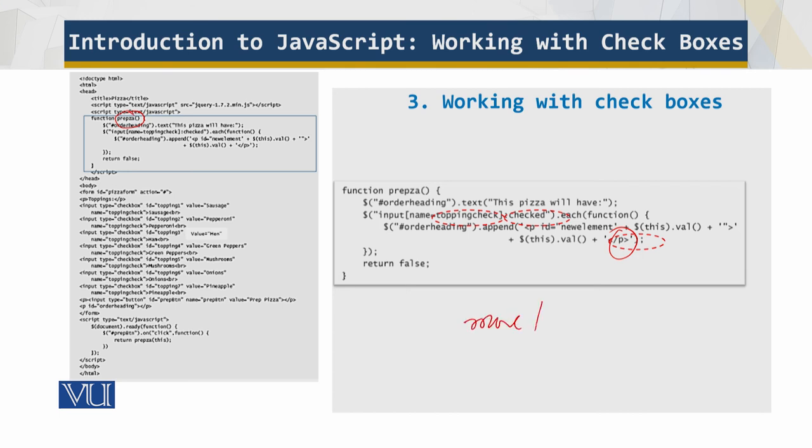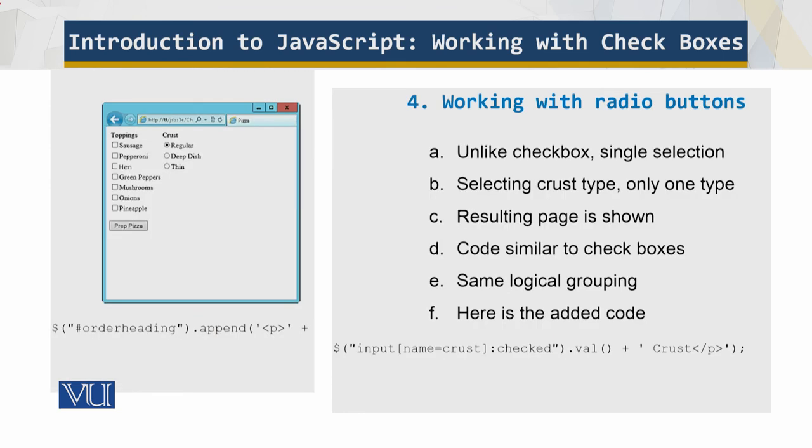Now remember you can have more toppings, but one thing is missing which is the crust. So how do we handle the crust? You need to have these radio buttons. Radio buttons also create a group of options but unlike check boxes, only one radio button from the group can be selected at a given time.